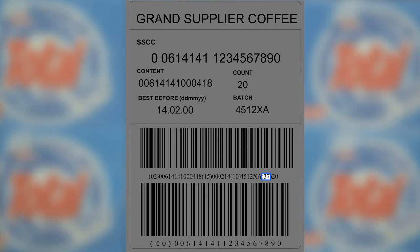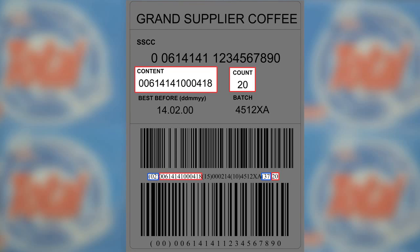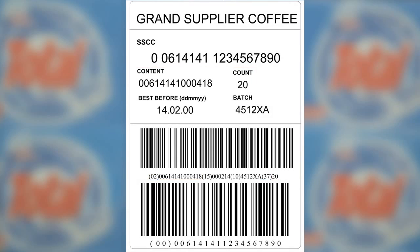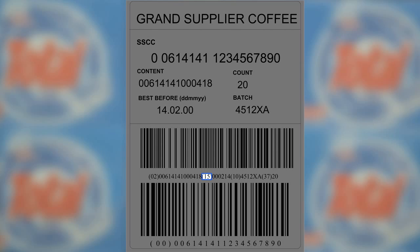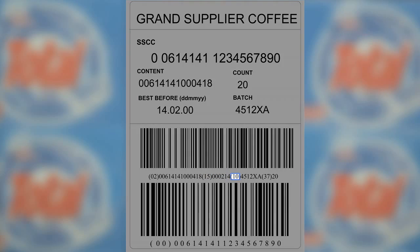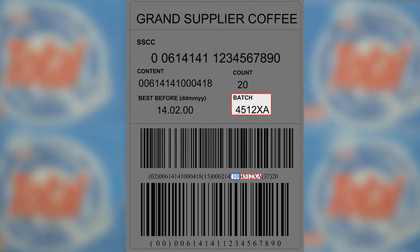Another AI defines the quantity of trade items contained on the logistic unit, with a maximum of 8 digits, and is always used in combination with the GTIN AI. Another AI defines the 6-digit best before date using the format year, month, and day. The AI (10) defines the batch number, up to a maximum of 20 digits.